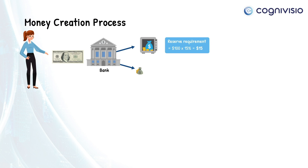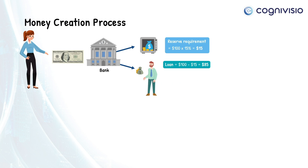Then, the bank will use the remaining $85 to loan out to economic agents with liquidity deficits. This loan taken by the borrower will result in the same $85 being spent, and these dollars will eventually make their way back to the bank in the form of another deposit.